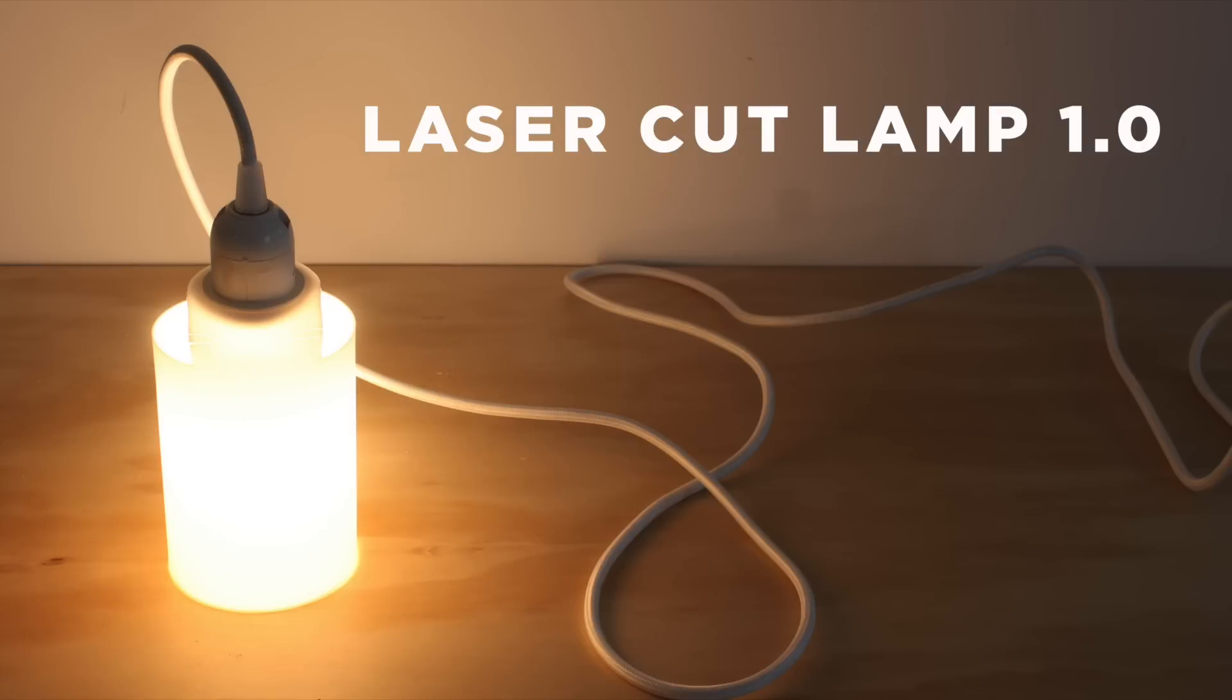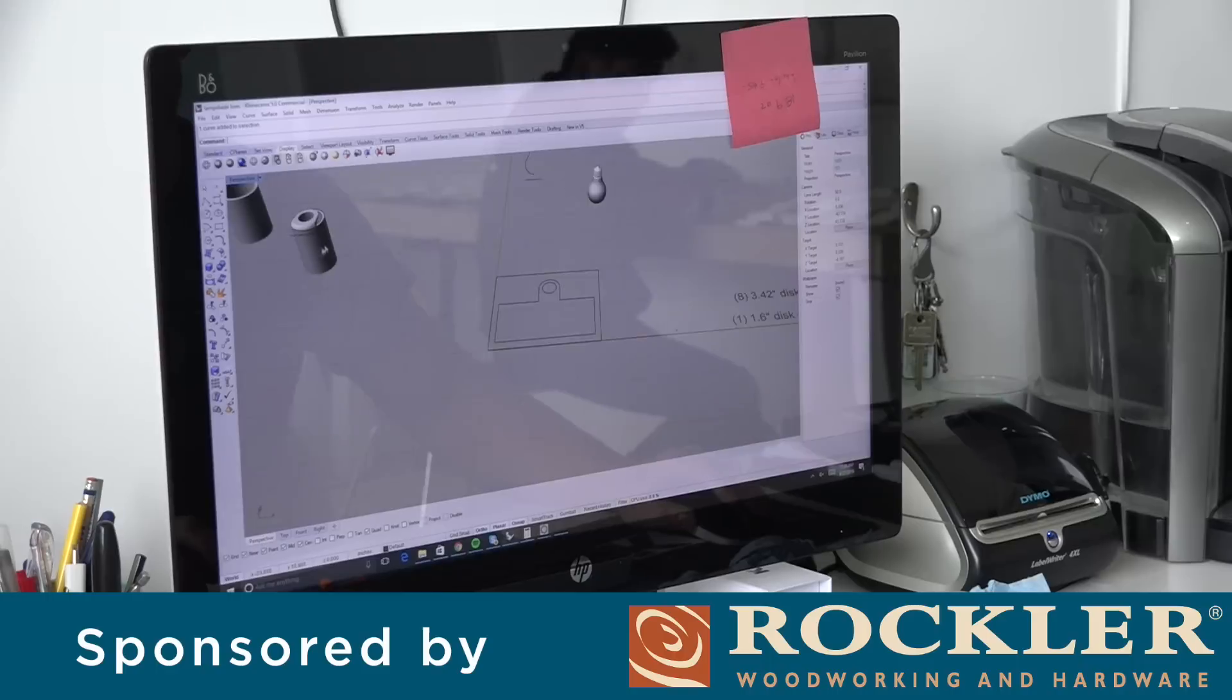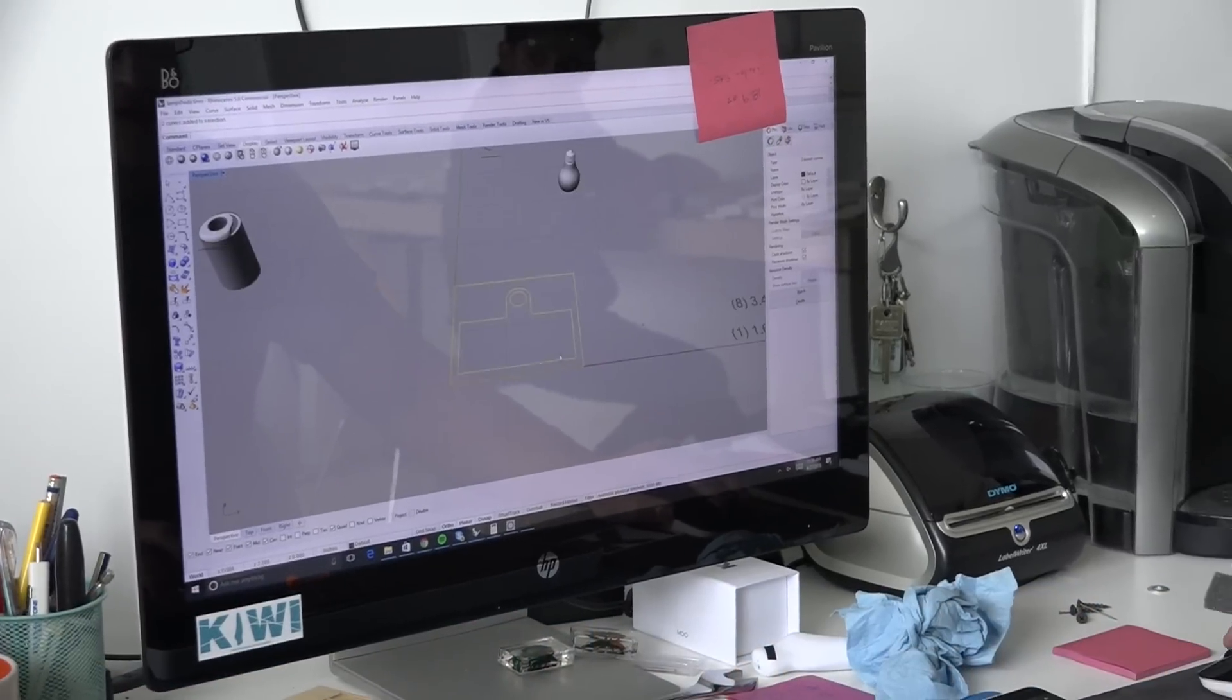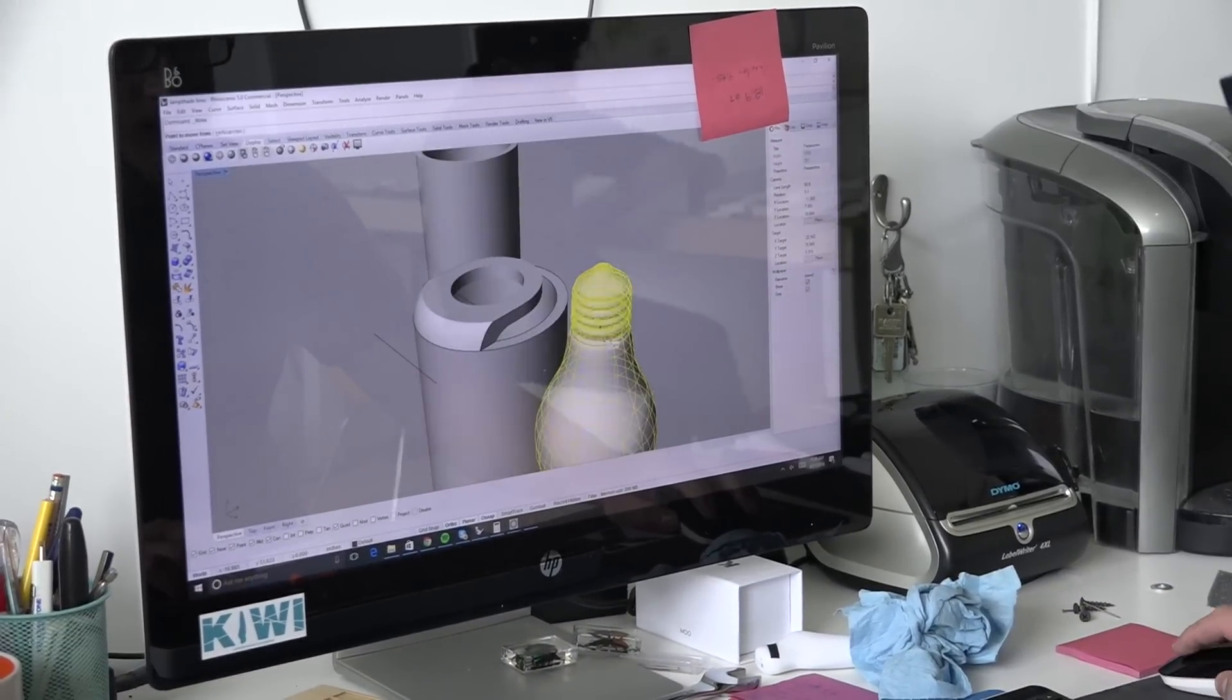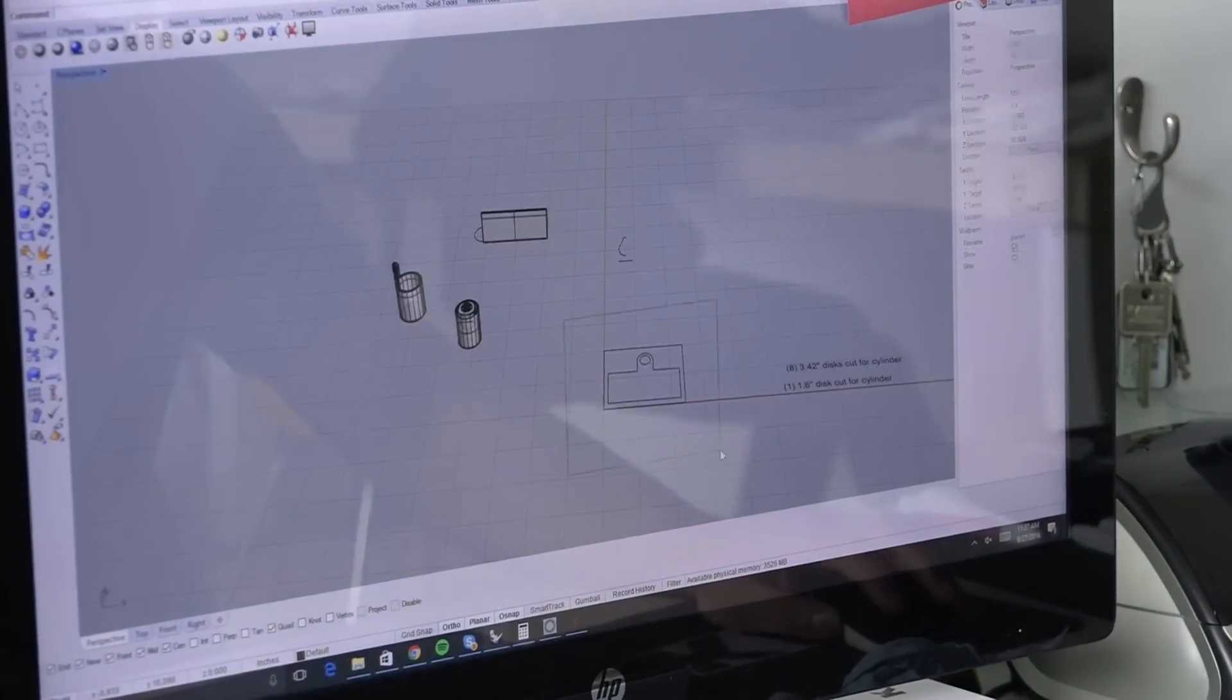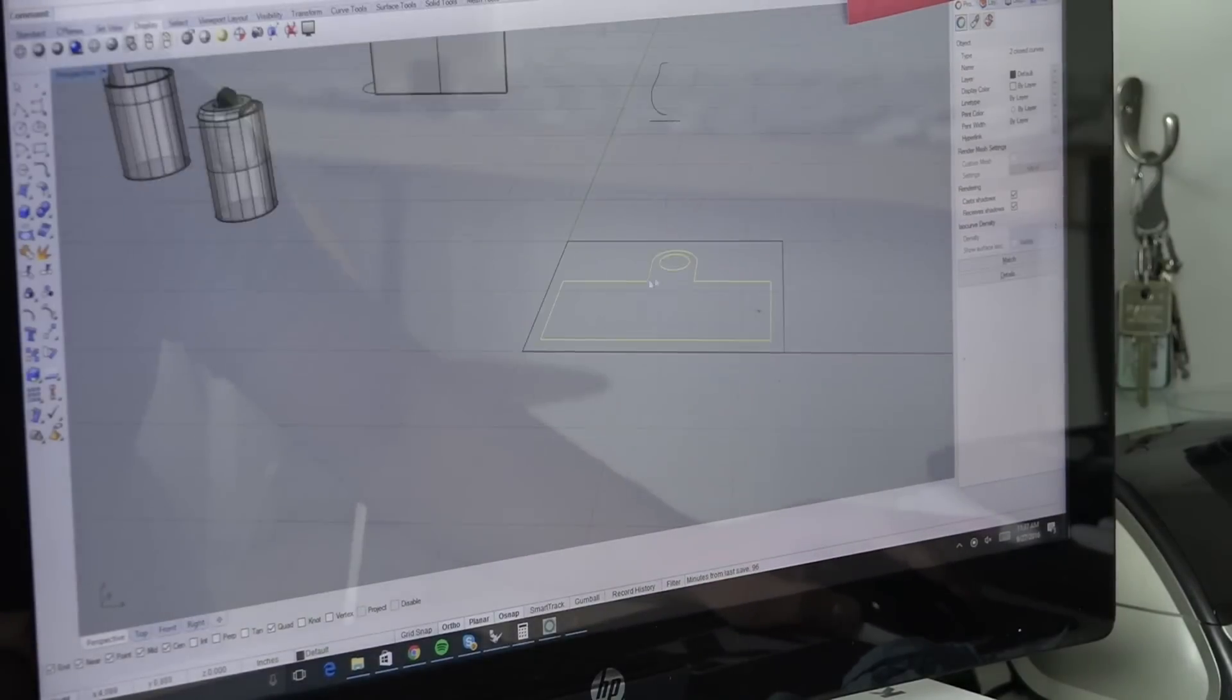Today we're going to make a laser cut lamp. For this project we decided to experiment both with laser cutting and thermal forming. We wanted to experiment to see whether or not we could use simple 2D computer files to make three-dimensional forms.